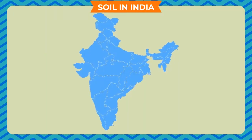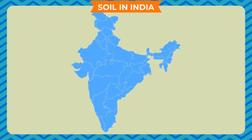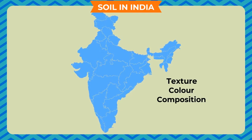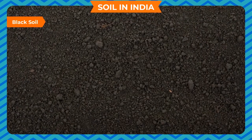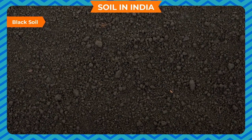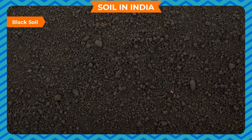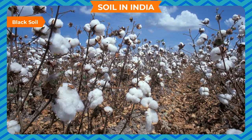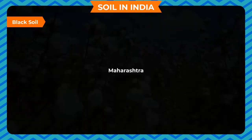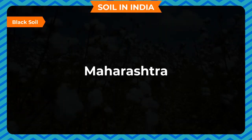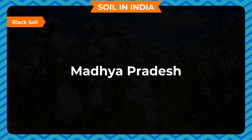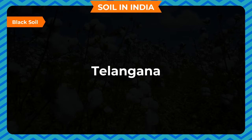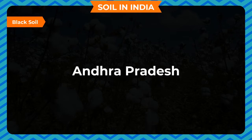Soil in India: India has a variety of soil depending on texture, colour and composition. Black soil is black in colour, formed by the weathering of volcanic rocks, and is good for growing cotton. It is found in Maharashtra, Gujarat, Madhya Pradesh, Karnataka, Telangana and Andhra Pradesh.